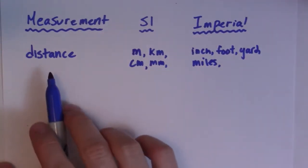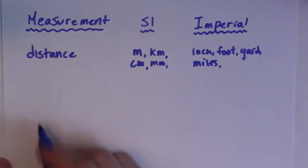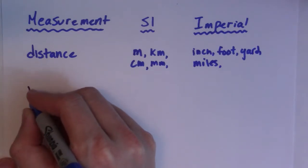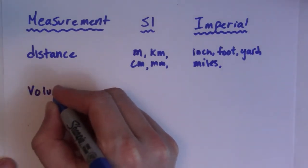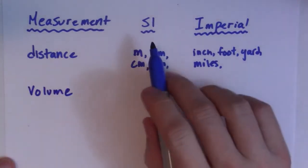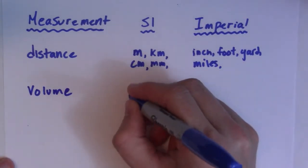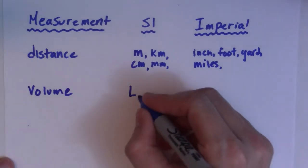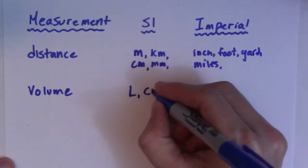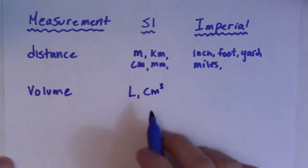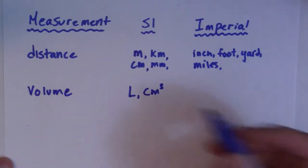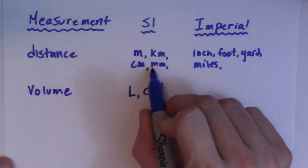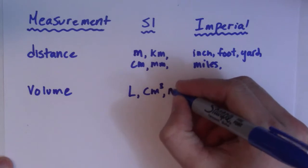Now let's talk about a few other things that maybe are a little less common. Let's talk about volume. In SI we see a lot of liters. That would be the most common, like 2 liters of milk. We also see centimeters cubed, which is essentially equivalent to a liter.